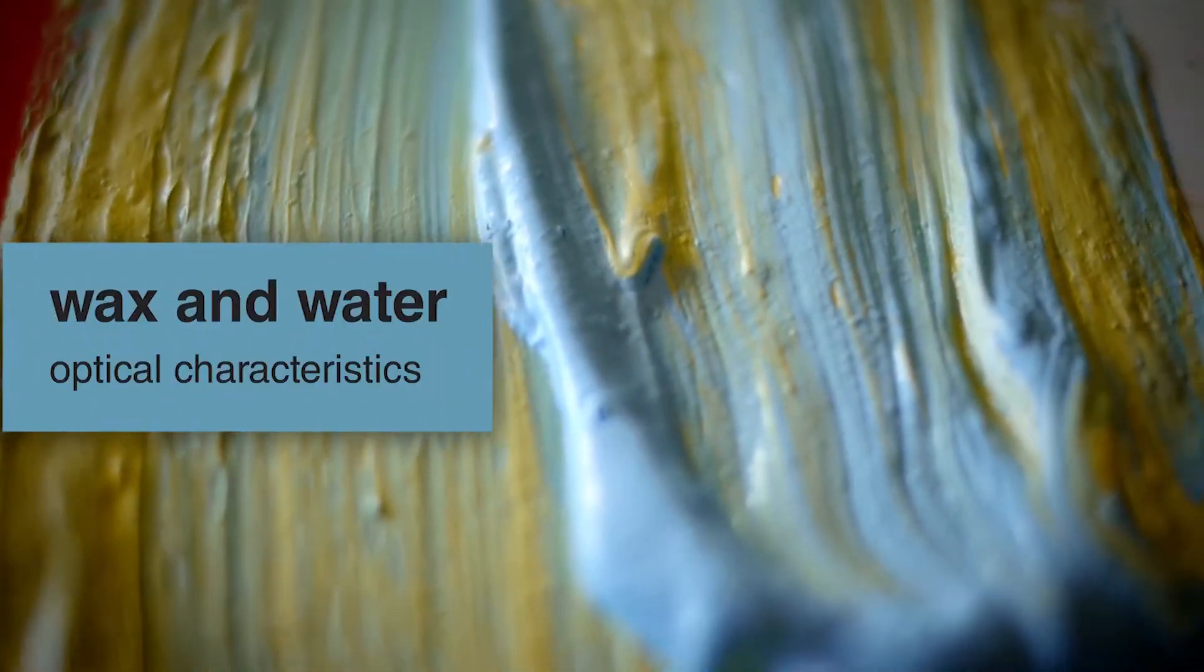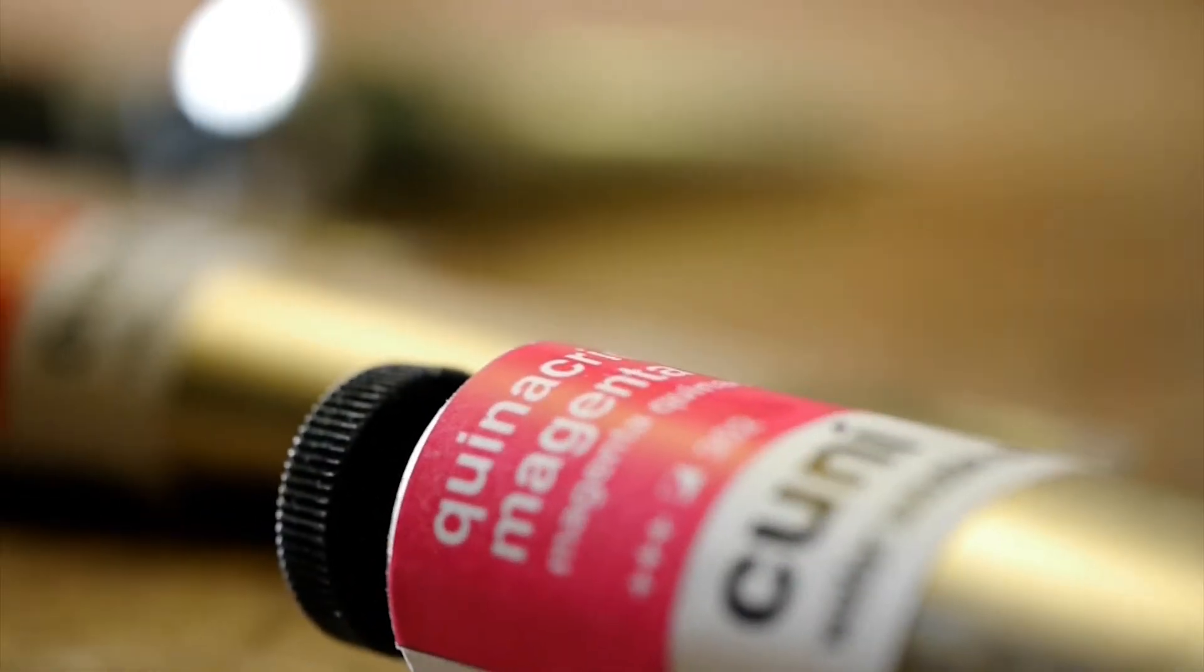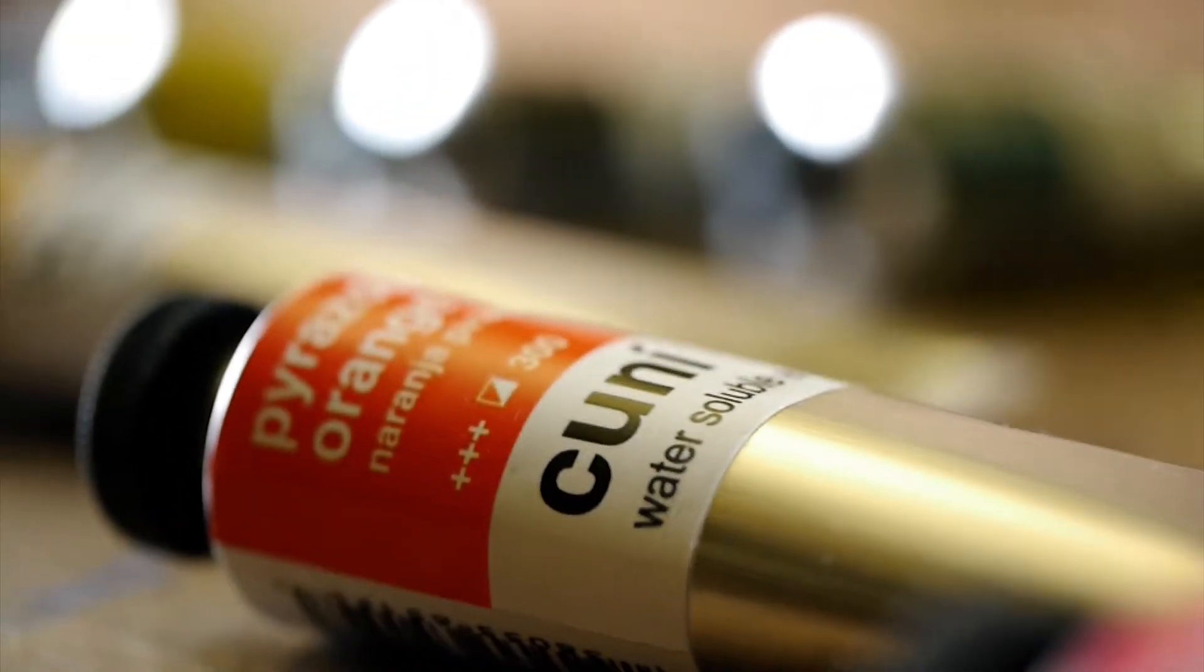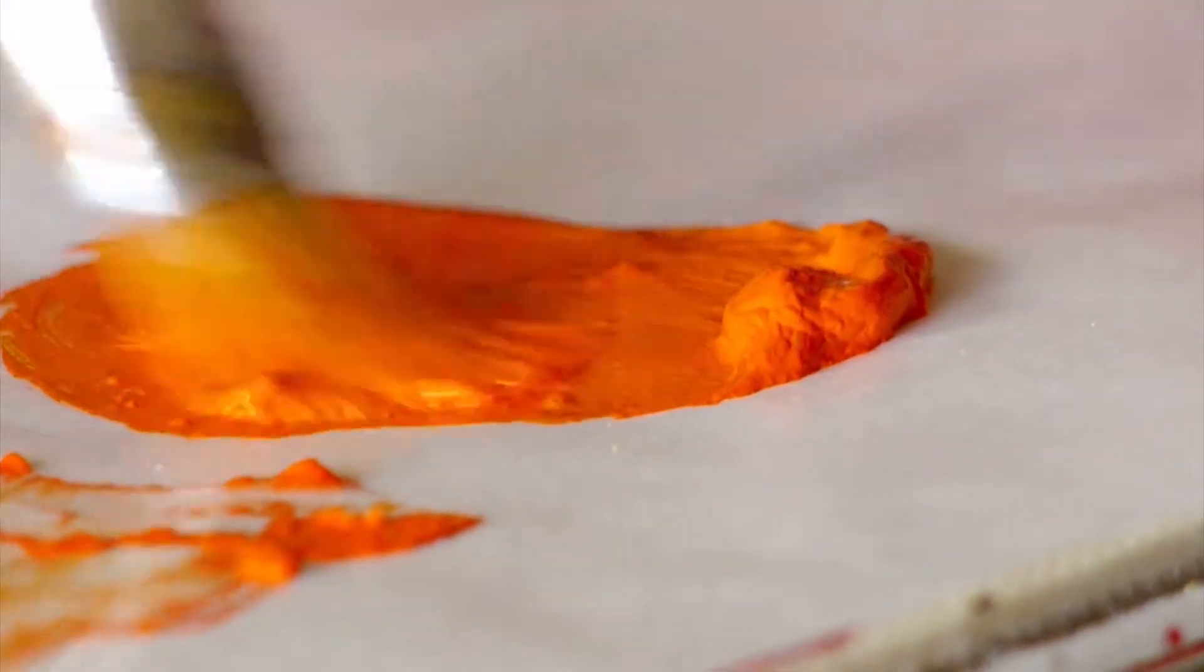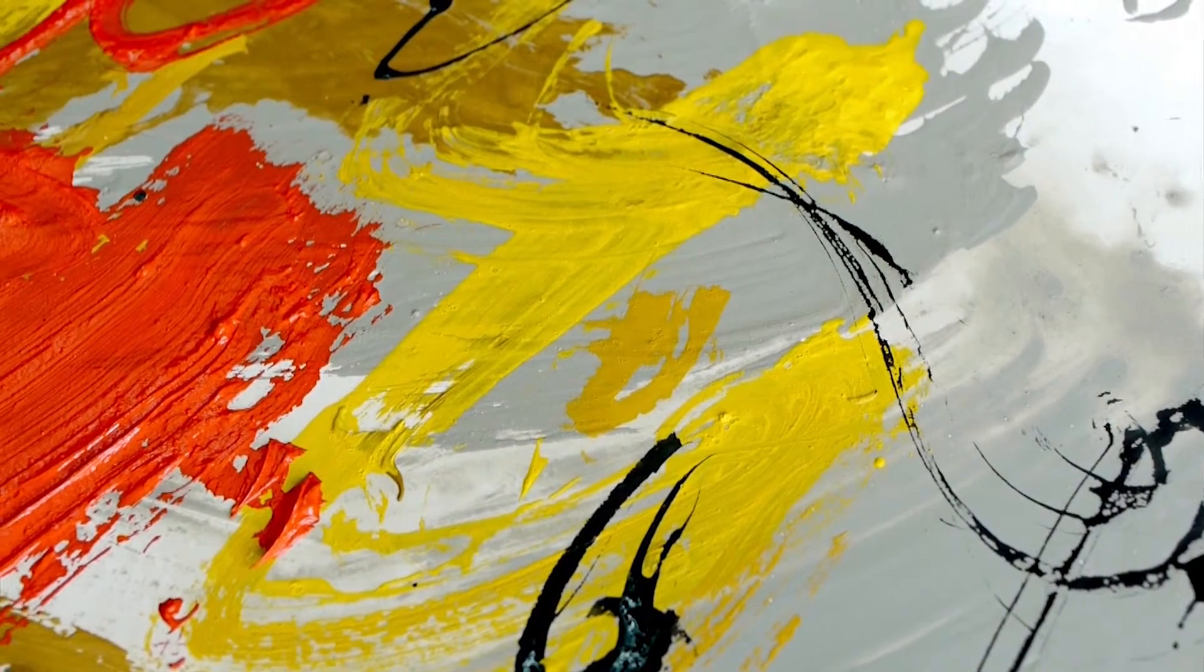Wax and water, optical characteristics. As in the formula employed in ancient Greece, the basic component of encaustic is beeswax, a unique material providing extremely durable and bright colors.